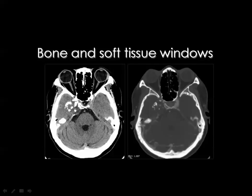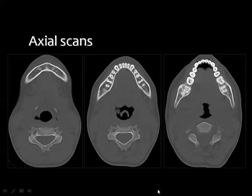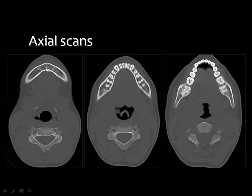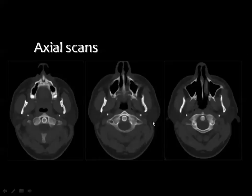Starting with axial images at the inferior border of the mandible proceeding superiorly: this is the symphysis menti or midline part of the mandible. Going upward you can see the teeth, the start of the mandibular ramus, the styloid process, and the maxillary sinus on both sides with the bony nasal septum. More superiorly you can see the maxillary antra, the ramus of the mandible, and the cervical spine.